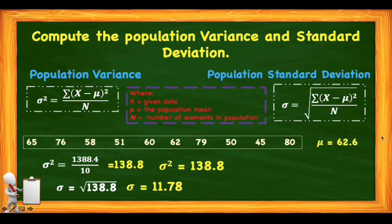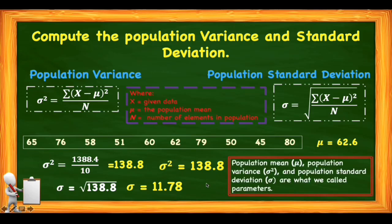Let's recap: the population mean is 62.6, the population variance is 138.84, and the population standard deviation is 11.78. We can say that the population mean, population variance, and population standard deviation are what we call parameters.